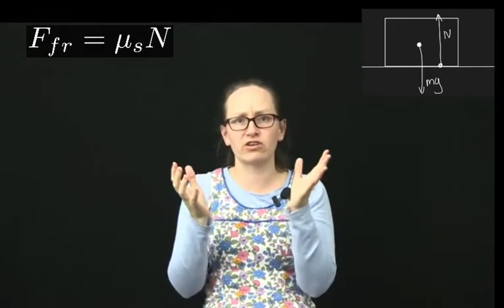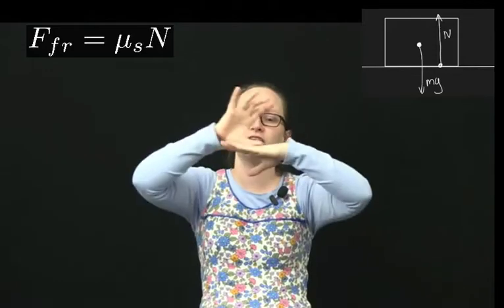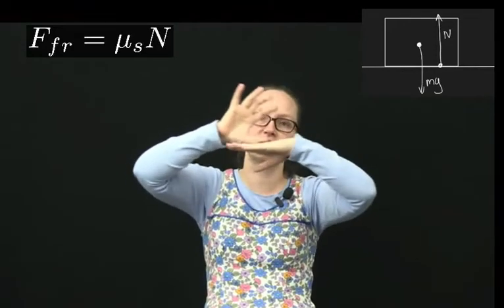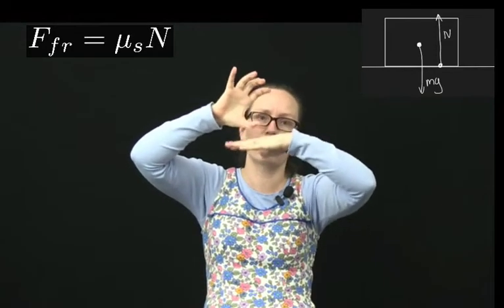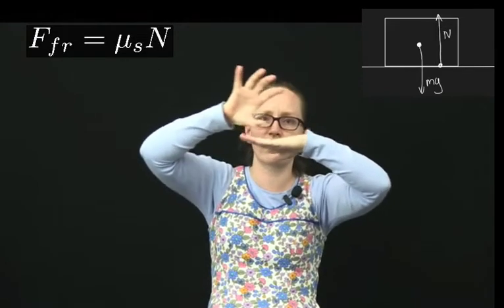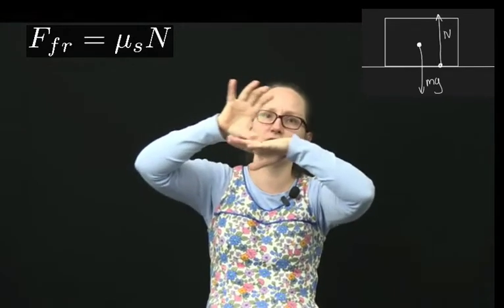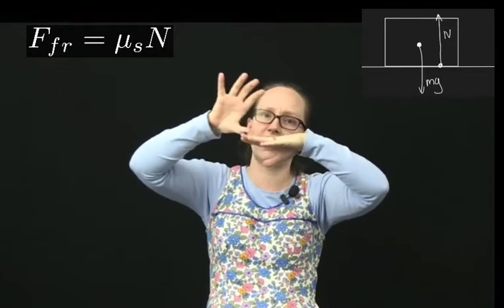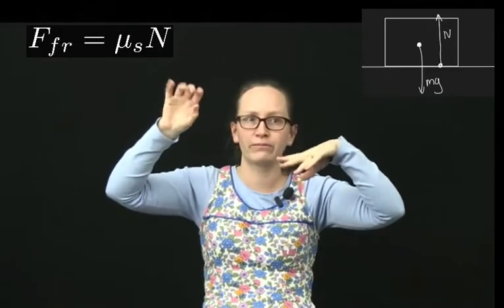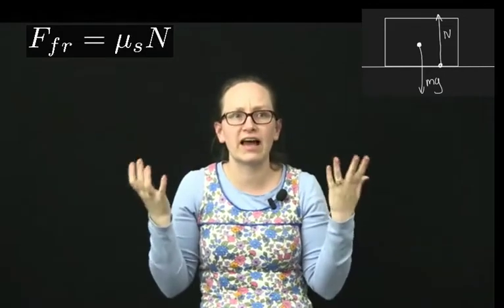The frictional force actually comes about because of the electrostatic attractions between the two objects. So you need a large force to overcome these and then a slightly smaller force to overcome them if they're already moving against each other. Let's have a look at a calculation now.